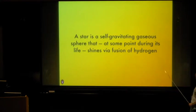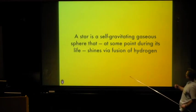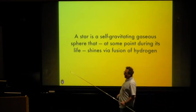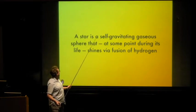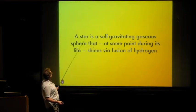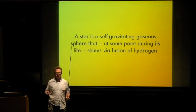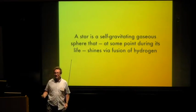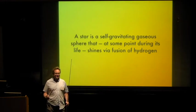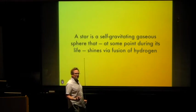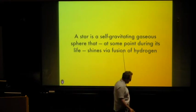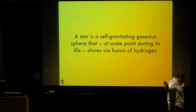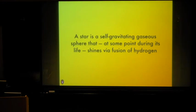I'm going to start by putting up a provisional definition of what a star is. A star is a self-gravitating gaseous sphere that at some point during its life shines via fusion of hydrogen. In this simple sentence there are a lot of interesting bits of physics. First, let's start with just the word 'star' — we're talking about a single, specific object. It's not some general concept like turbulence or electromagnetic radiation.